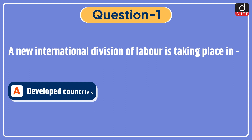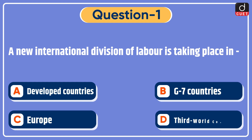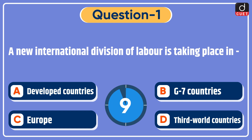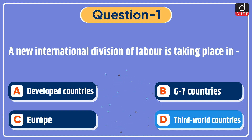Now let's begin today's session. First question: a new international division of labor is taking place in — developed countries, G7 countries, Europe, or third world countries? The correct answer is option D, third world countries.